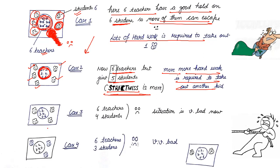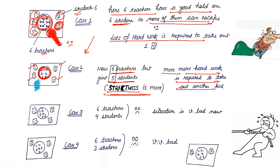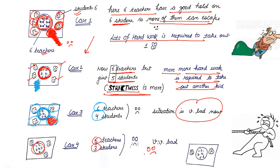Let's assume another student also escapes. Now we are left with 6 teachers but just 4 students — 6 teachers are very, very tightly holding 4 students. Let's say one more student escapes: 6 teachers, just 3 students. Then one more: 6 teachers and just 2 students. At this point the student should literally start crying if he has to escape out of the class.